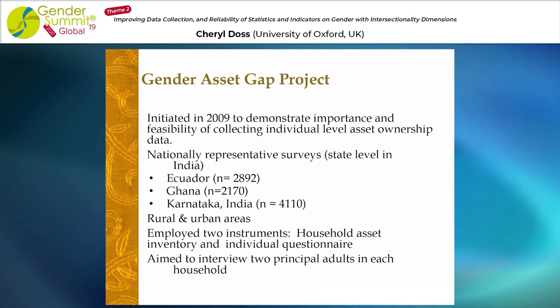We did these in both rural and urban areas. After extensive qualitative work, we employed two instruments: first, a household asset inventory in which we asked one person in the household about every asset owned by anybody within the household across a full range of assets; and an individual questionnaire in which we asked the two principal adults, typically a man and a woman, about their own ownership of assets.